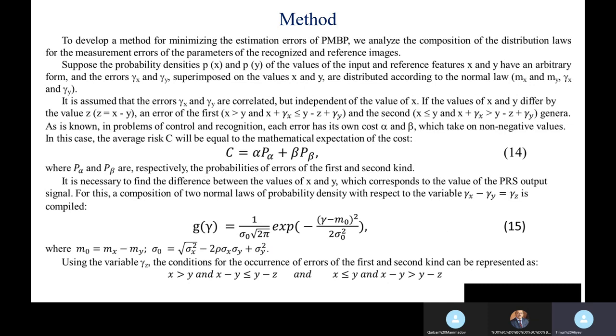To develop the method for minimizing the estimation errors of PMBP value, we analyze the composition of the distribution laws for the measurement errors of the parameters of the recognized and reference image. Suppose the probability density of PMBP value, the values of the input and reference features X and Y, are in arbitrary form, and the errors gamma_x and gamma_y superimposed on the values X and Y are distributed according to the normal laws. It is assumed that the errors gamma_x and gamma_y are correlated but independent of the value of X.